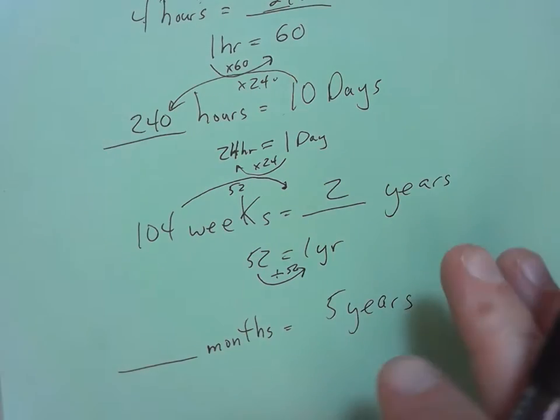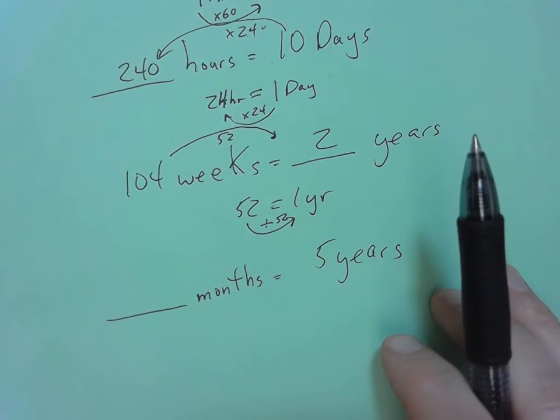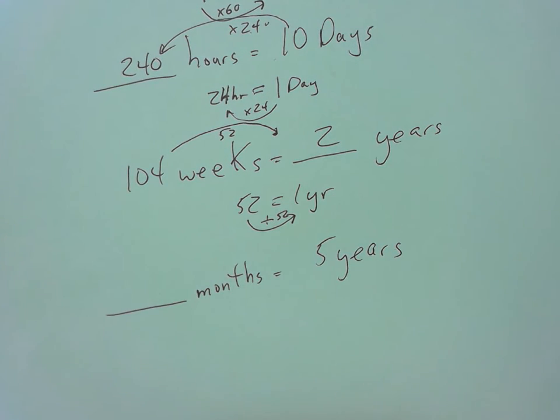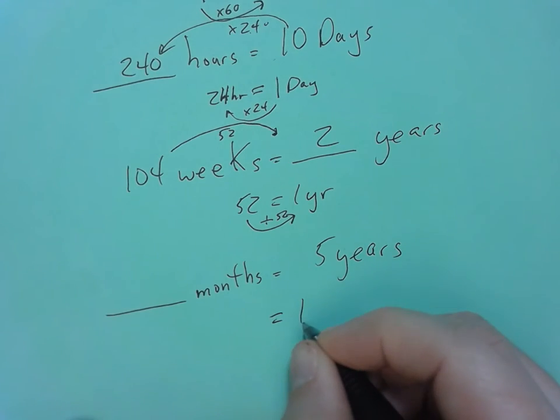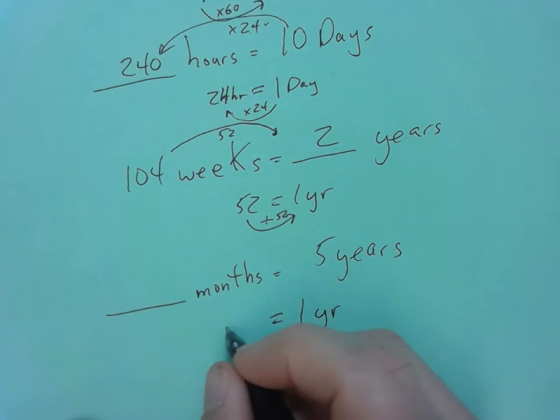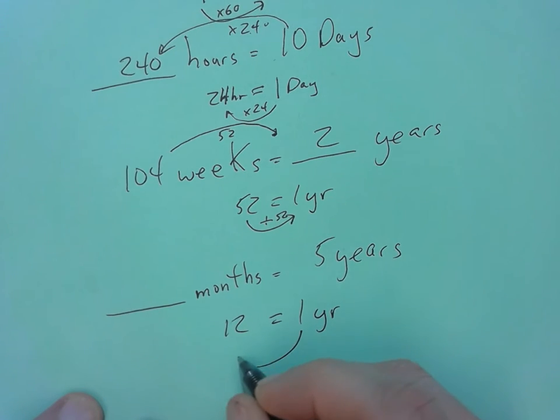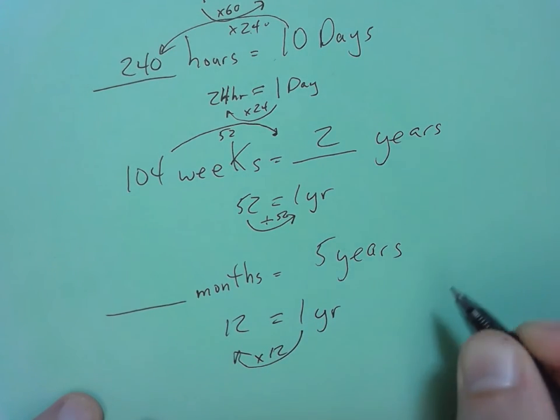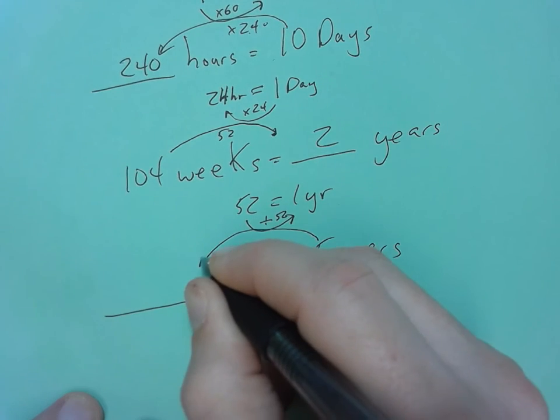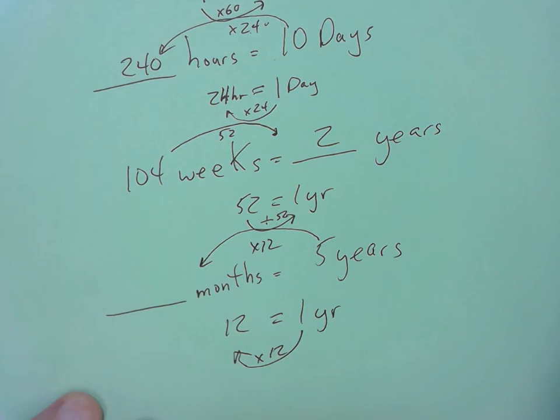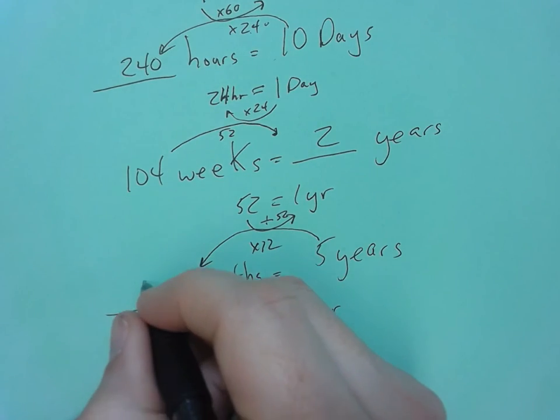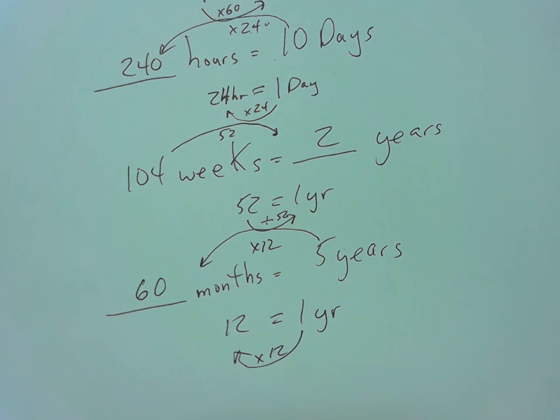And the last one down here, blank months equals five years. I know that one year is equal to 12 months. To go from 1 to 12, I multiply by 12. So I take my years times 12 to get the number of months. Five times 12 is 60. So there are 60 months in five years.